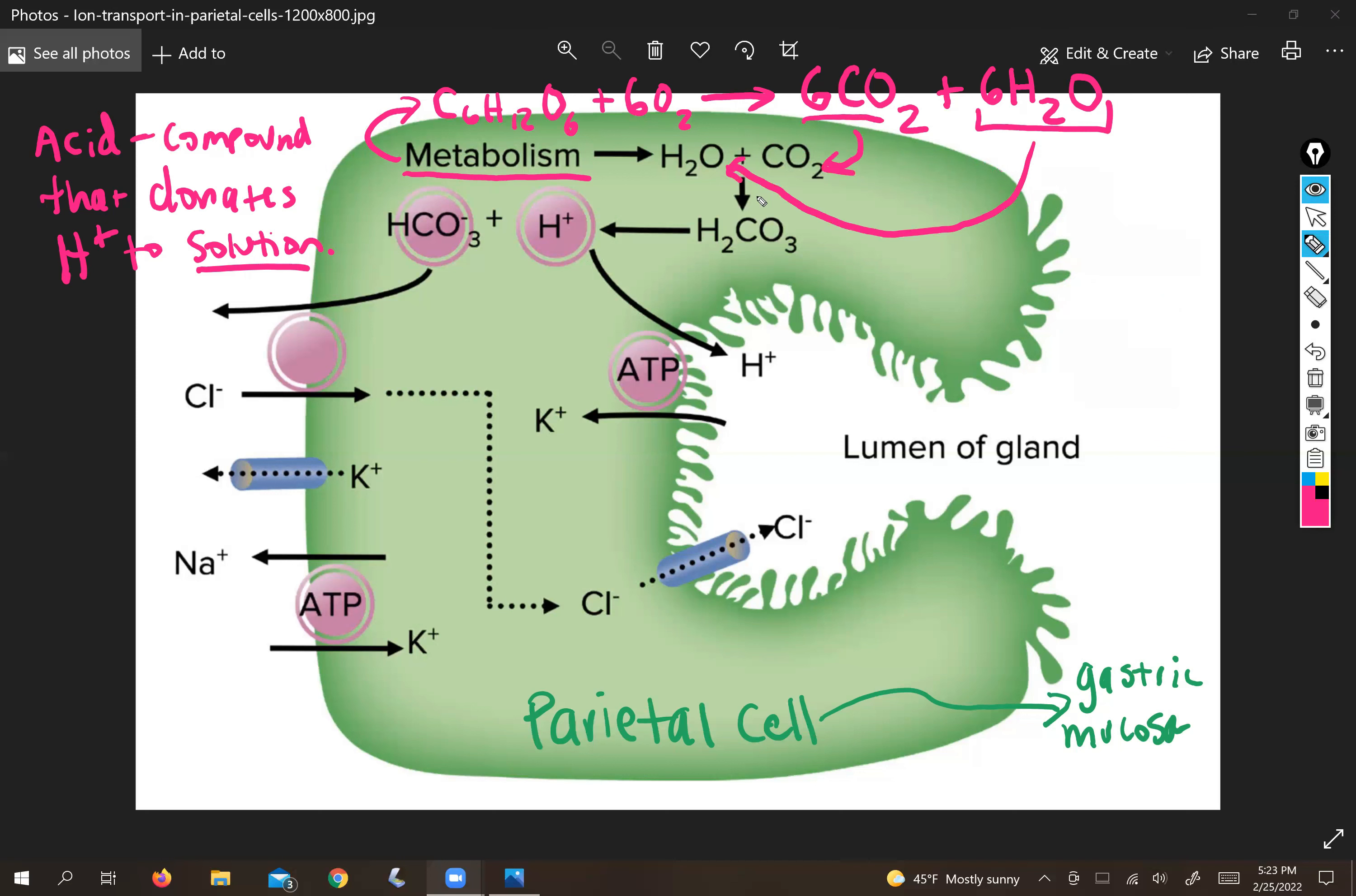So if that's going to happen anyway just by necessity, you might as well use that to make useful stuff. So in the case of parietal cells, this is the reaction that's going to use the byproduct of cellular metabolism and recycle them into carbonic acid.